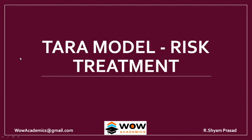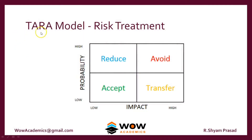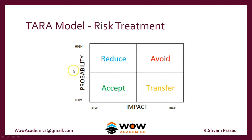We will move on to the TARA model. This is called the TARA model — T, A, R, A. The model says that once you have found the risk and found out the probability and impact, classify that risk into these four boxes. On impact, we have the impact on the profit — that can be a low impact or a high impact. The probability of occurrence can be low or high.